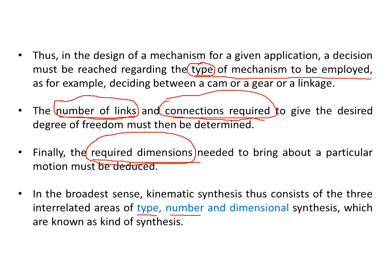In number synthesis, the objective is to find the number of links for a given mechanism. For example, if I am going to design a gear train, how many gears should be employed? That is a number synthesis problem. In dimensional synthesis, I determine what dimensions are required — what should be the diameter, etc. These are the kinds of synthesis.